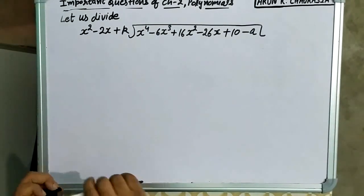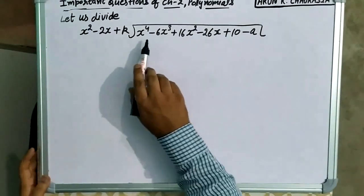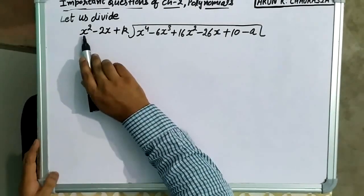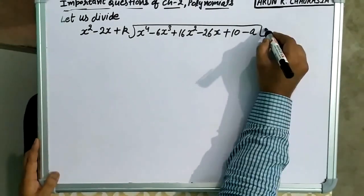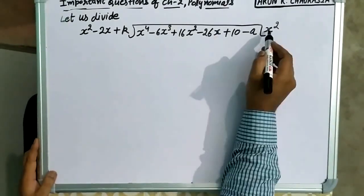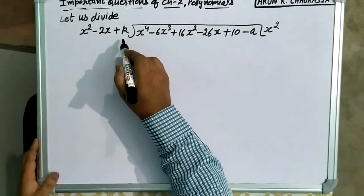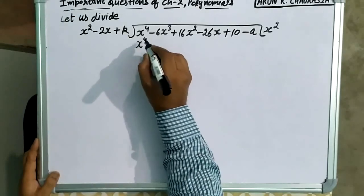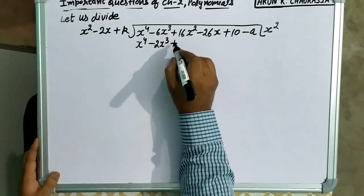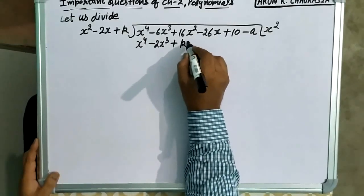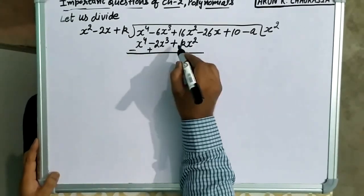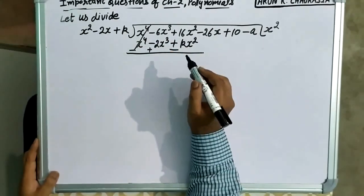Now let us divide. x square minus 2x plus k से divide करते हैं — dividend जो degree 4 में है. x square पहली term देखते हैं: x square और x4, तो हमें x square से multiply करना है ताकि x square से x raise to power 4 बने. तो x square से इस पूरी polynomial को multiply करते हैं, तो यह बनेगा x4 minus 2x cube plus kx square. अब sign change करते हैं, तो यह cancel out हो जाएगा.